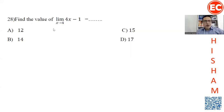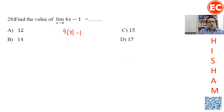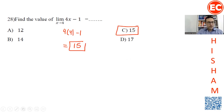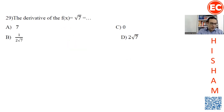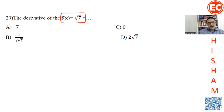For a limit question, to find the limit as x approaches 4 of 4x minus 1, all you have to do is replace x with 4: 4 times 4 minus 1, which equals 15. It's an easy question.